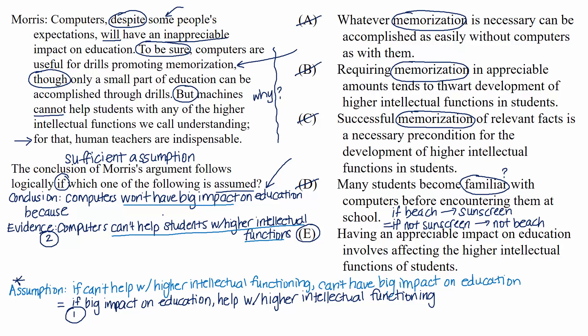To recap: for sufficient assumption questions, it's very helpful if you can phrase the conclusion and the evidence simply and accurately. Then you can look for the gap between the evidence and the conclusion and make a prediction for what connects the gap — that connection is what ensures the conclusion follows logically. If you want to test a choice, add it to the passage evidence and ask yourself what the implication is; if that implication matches the passage's conclusion, you have the answer. Watch out for choices that aren't relevant to the main argument — in this example, three choices dealt with memorization, which didn't contribute to the main structure. Stay sharp with identifying your main conclusion and main evidence, and look for the gap that the answer will close.